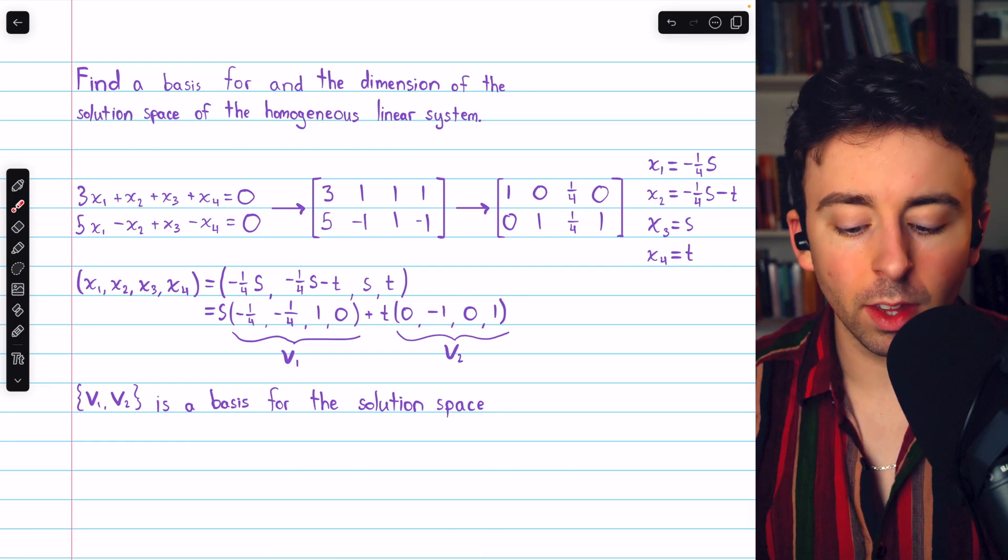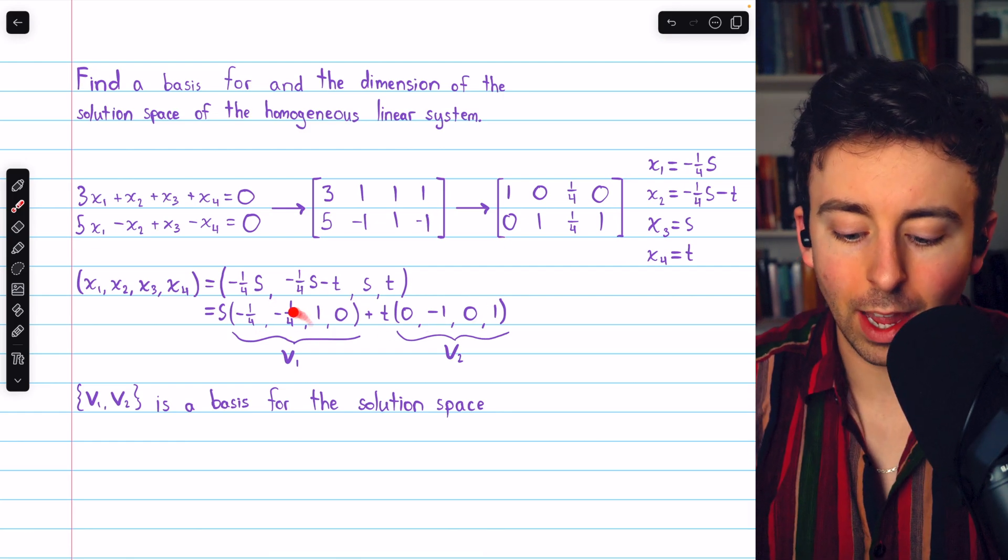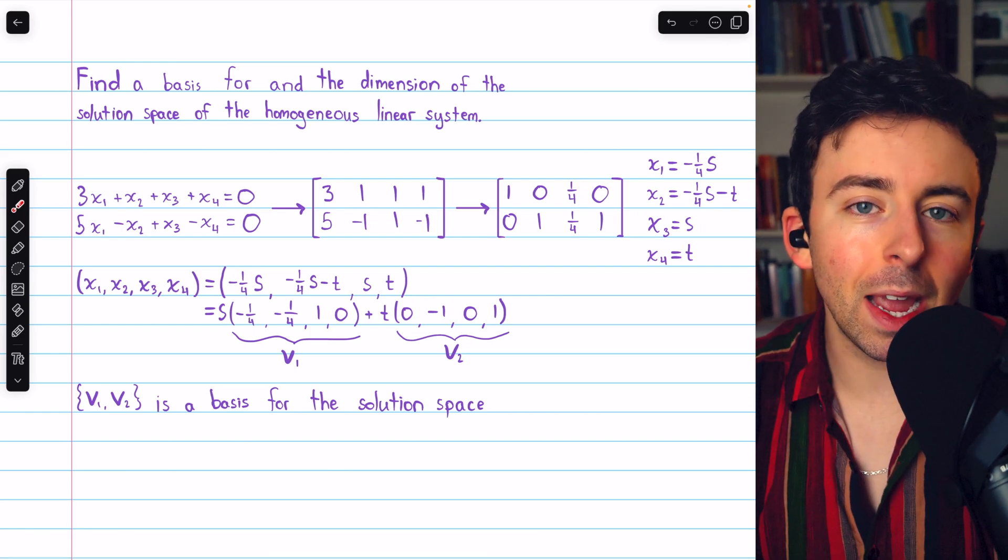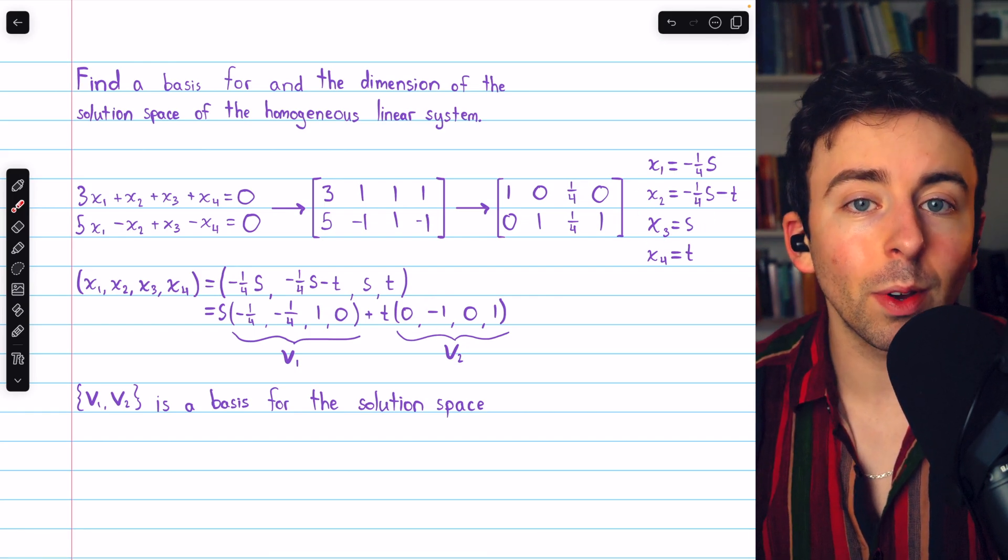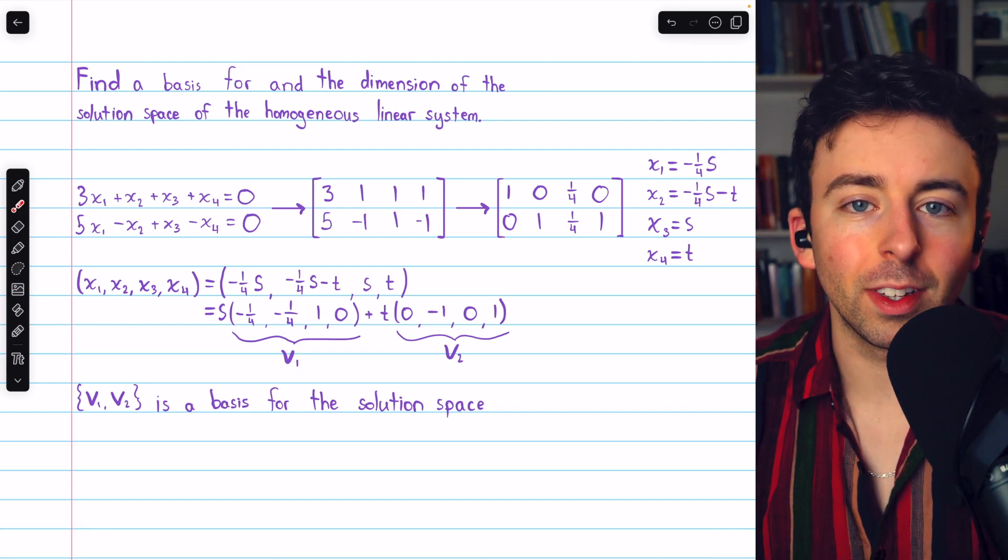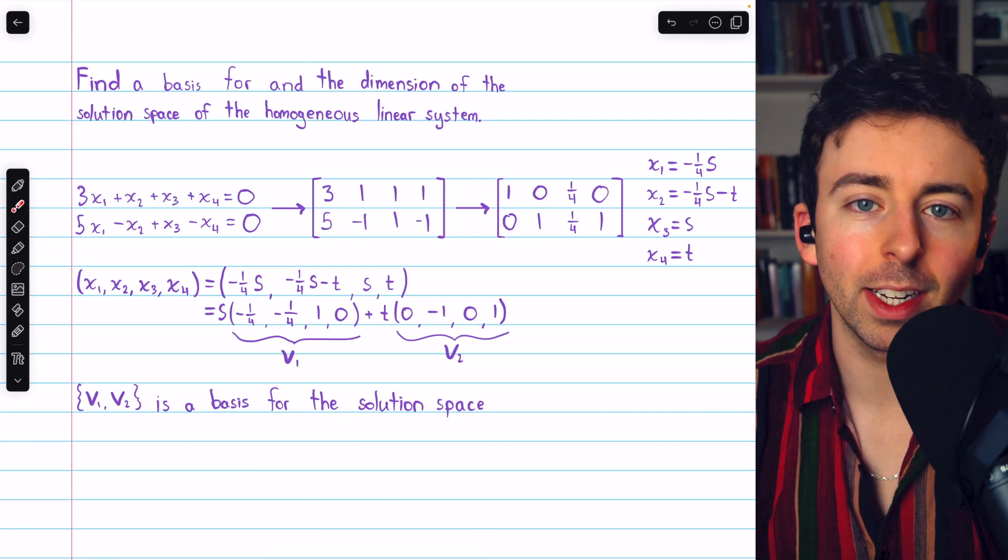How do we know that? Well, obviously, the vectors span the solution space; they came directly from solving the system. For it to be a basis, the two vectors also have to be linearly independent. In this case, with only two vectors, it's easy to see that they're not scalar multiples of each other, and so they are linearly independent.